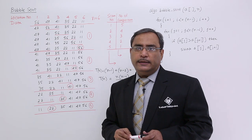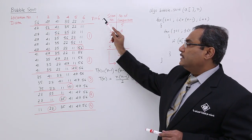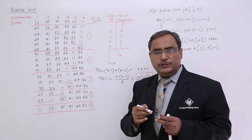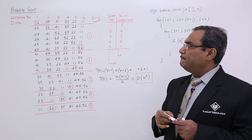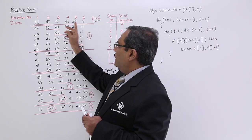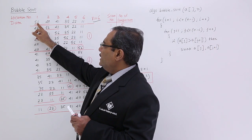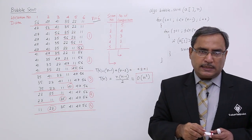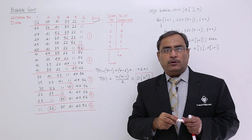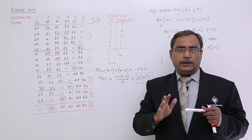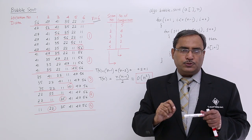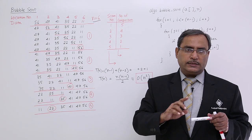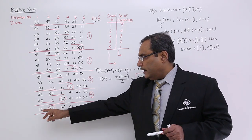Let us suppose we are having n equal to 6 — 6 numbers in this particular array. The array locations are ranging from 1 to 6, and the data initially is 56, 47, 41, 35, 22, 11. You might be asking me this data is already sorted in descending order — yes, it is. I have taken this one as an example for a reason, which I shall discuss later.